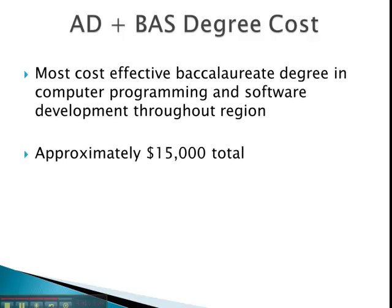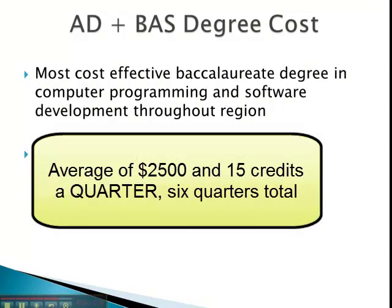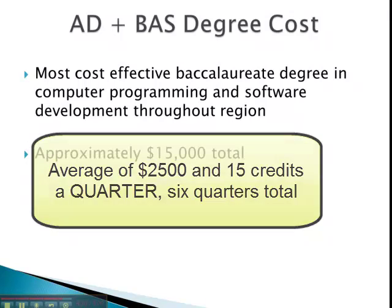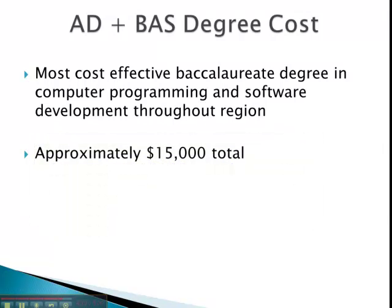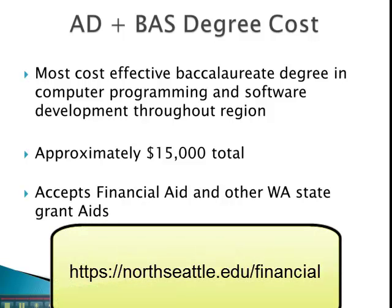Fortunately, our BAS program is highly competitive when comparing to other four-year BAS degrees. We predict that tuition will be an average of $2,500 per quarter, six quarters total, for an average of 15 credits a quarter. This could of course be less or more depending on the student and what they have left to complete for graduation. Therefore, the completion of the AD BAS degree program is approximately $15,000 total. Our program does accept financial aid and other Washington State grants. You will want to view the financial aid page on our college website to find out what you may qualify for.